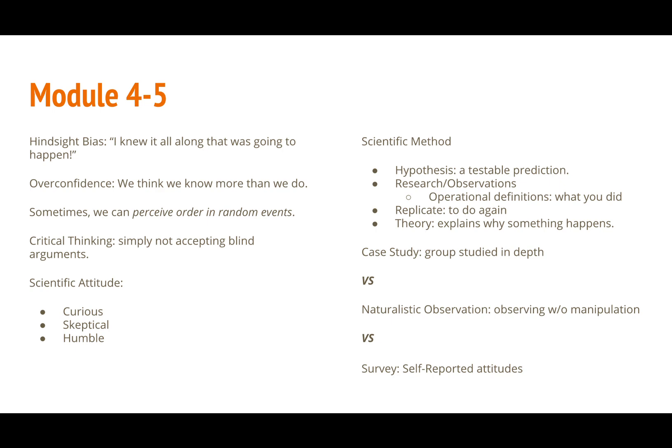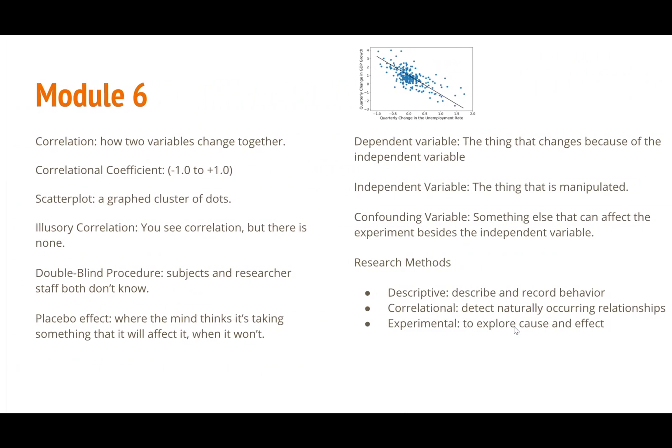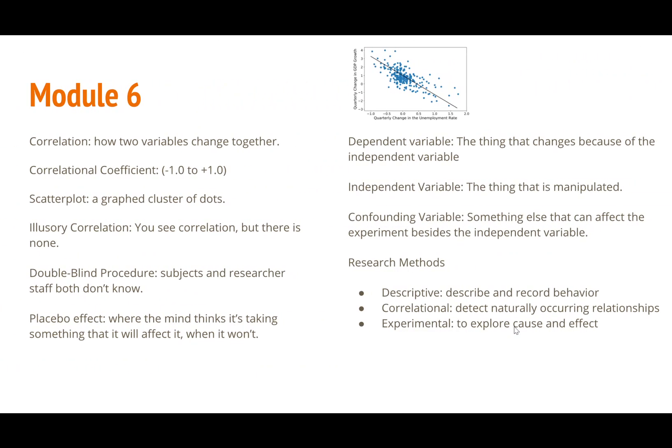Onto module 6 which delves into the statistics part of psychology. Essentially correlation is how the dependent variable and independent variable change together. Something that tags along the idea of correlation is the correlation coefficient or the number that shows how much a variable changes or relates numerically.